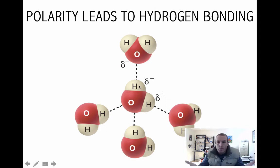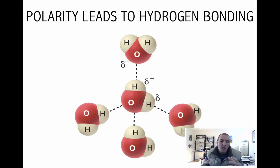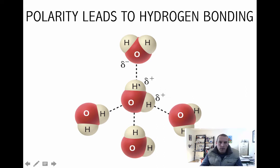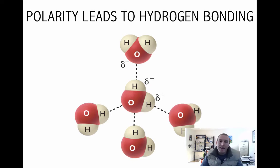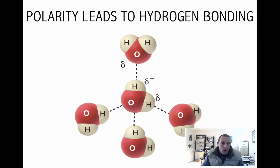If you mix a bunch of water molecules together — like liquid water from a tap — what's happening is you get a network of water molecules associating with one another. The slightly negative oxygen attracts to the slightly positive hydrogen. Opposites attract, just like the poles of a magnet. The slight negative charge on the oxygen of one water molecule attracts the slight positive charge on the hydrogen of another — that attraction is a hydrogen bond.